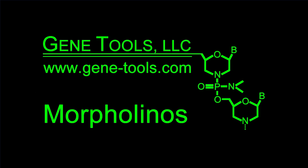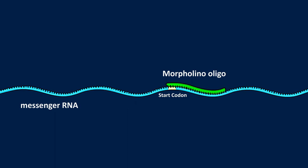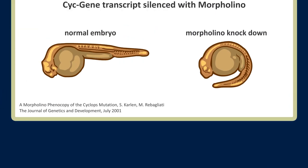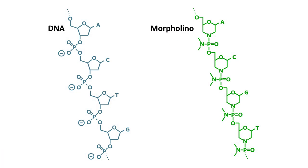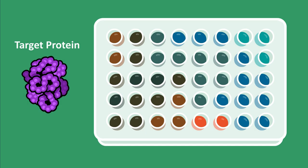Introducing Morpholino Oligos and their use for blocking protein synthesis. Morpholino Oligos are molecular tools commonly used in vitro and in vivo to block translation of a targeted transcript, modify splicing of a pre-mRNA, or disable a functional sequence of RNA. Morpholinos are currently used in research and medicine, including human therapeutics. This video explains what Morpholino Oligos are, their mechanism of action, how they block translation, and how to tell if Morpholinos are working in your translation-blocking experiments.